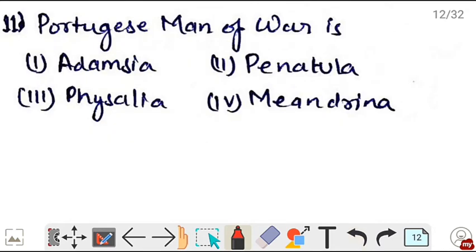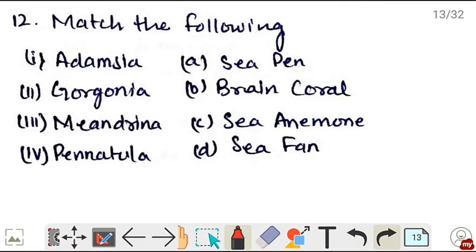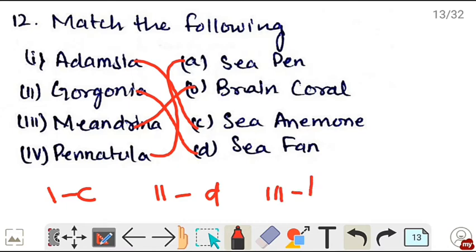Next, Portuguese man of war is - Physalia, because of its structure, looks like the cap that Portuguese men wore, is called Portuguese man of war. Correct is option 3. Next, match the following - Adamsia is C, sea anemone; Gorgonia is D, sea fan; Meandrina is B, brain coral; and Pennatula is A, sea pen. So the correct match is 1-C, 2-D, 3-B, 4-A.